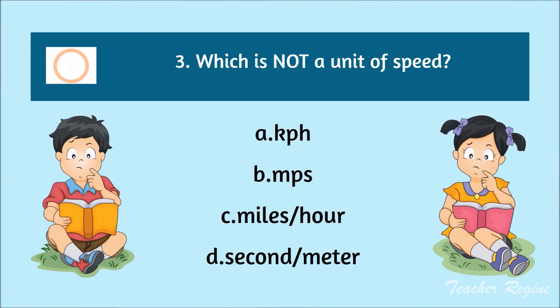Number 3. Which is not a unit of speed? A. KPH, B. MPS, C. Miles per hour, or D. Second per meter. The correct answer is letter D. Second per meter.